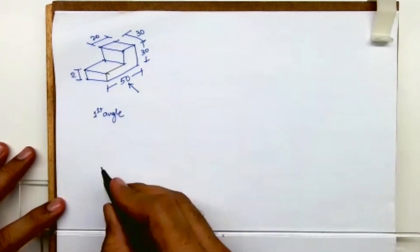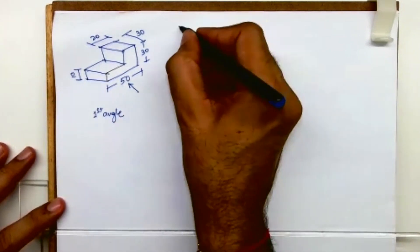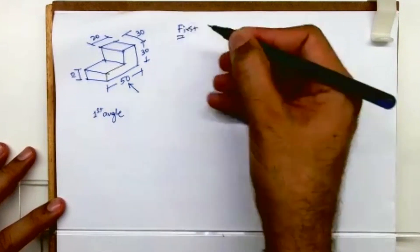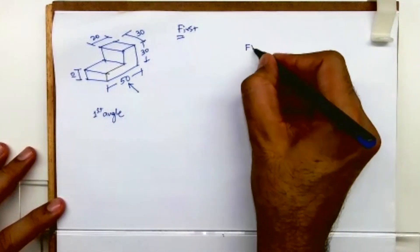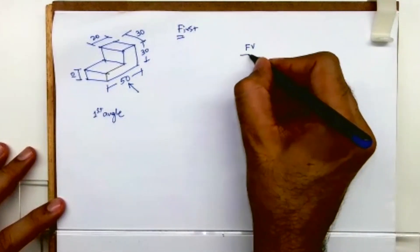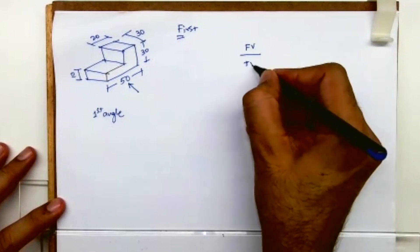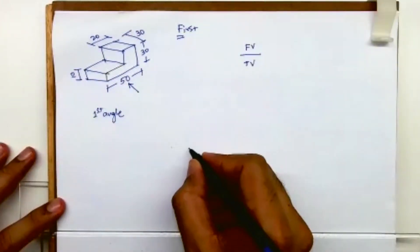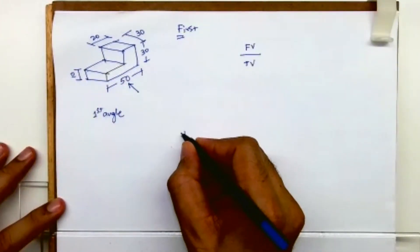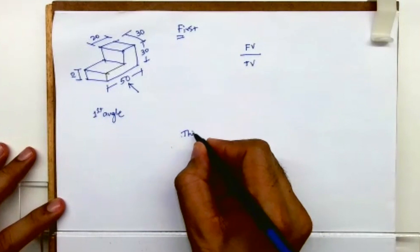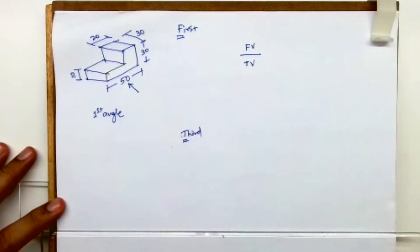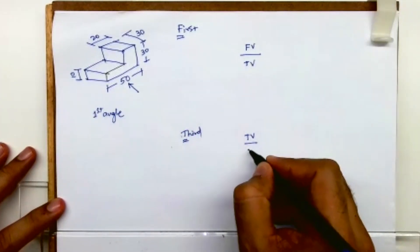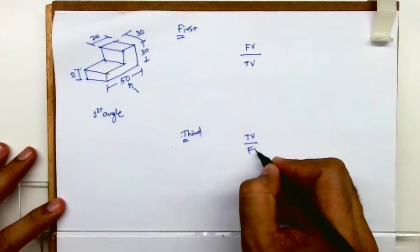First angle starts with F, so I will draw the front view up and the top view down. The same thing applies for third angle — third angle starts with T, so top view goes up and front view goes down.